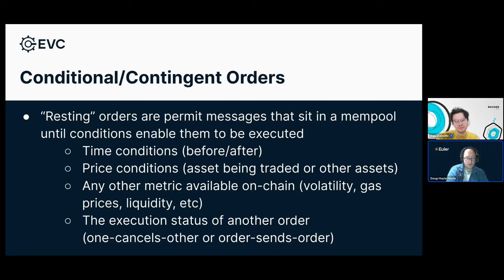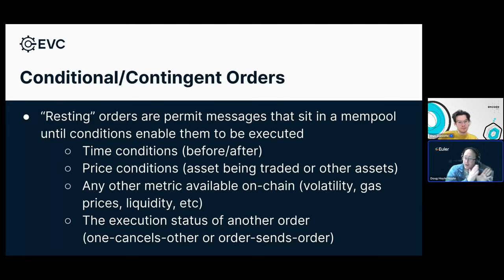Another thing to think about is that these gasless transactions can also be used to implement resting orders — orders that exist off-chain in a mempool and only when certain conditions are triggered, are they executable. Another interesting mechanism is you can actually look at the execution status of another order, making it so that one order has to execute after another order, or executing one order guarantees to cancel another order, or it enables the conditions that allow another order to be executed. You can compose them in quite advanced ways, which brings us to the nonce system on permit. Permit has some of this sequencing stuff built in.